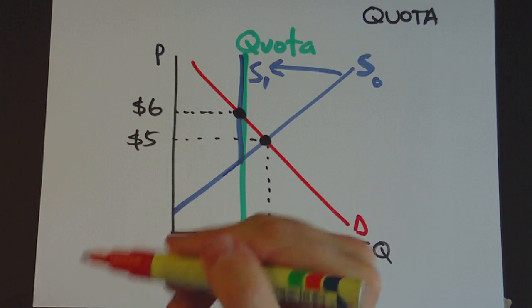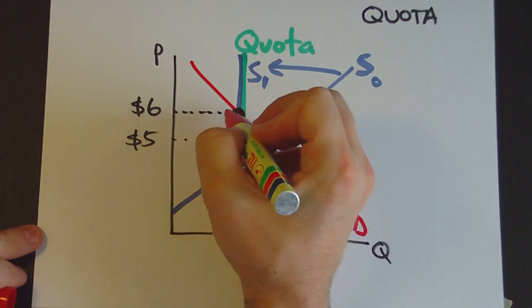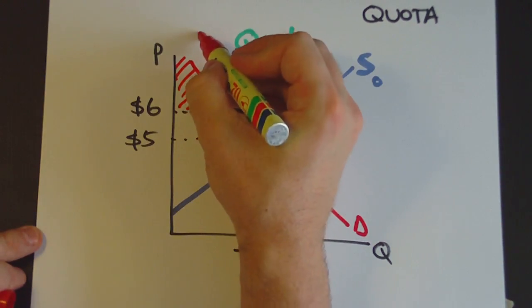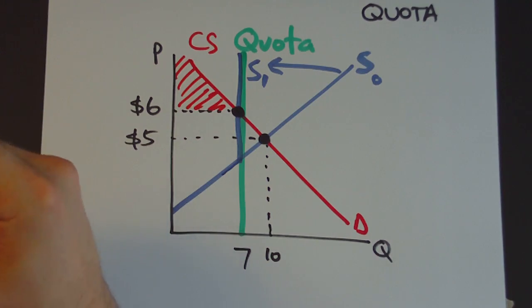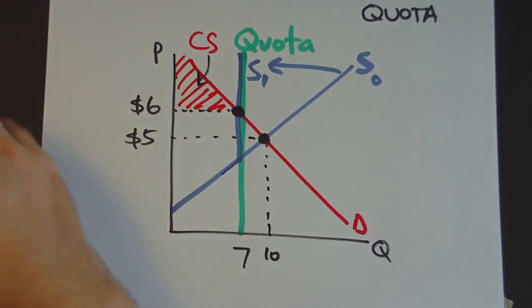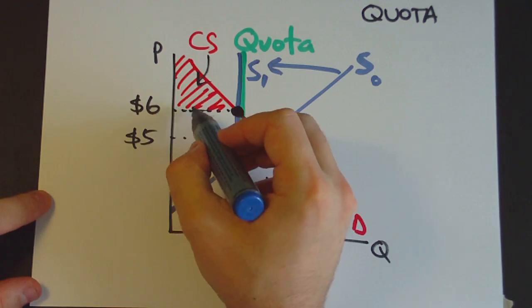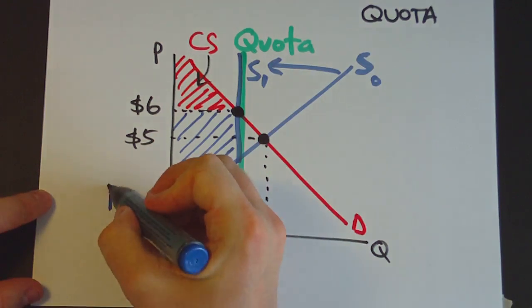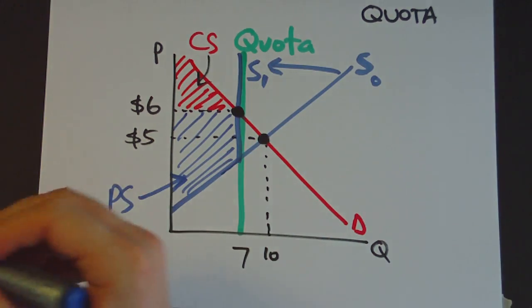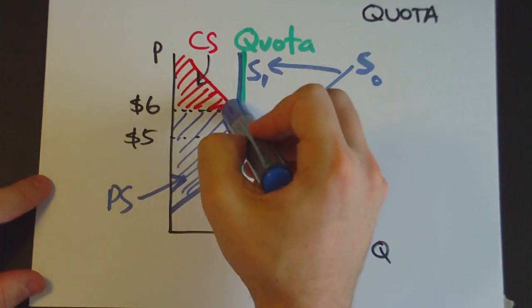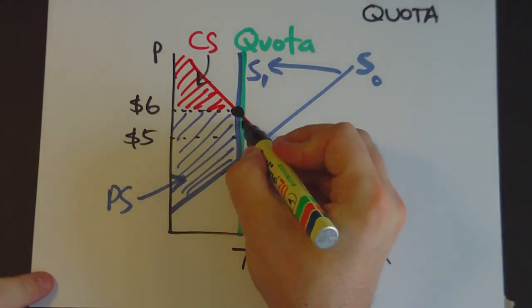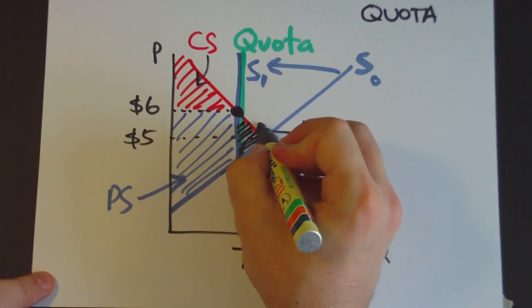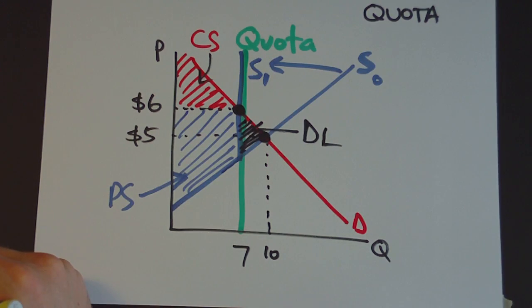What happens to consumer surplus? Consumer surplus is the area between this horizontal line at which the market is operating and the demand curve — so it's now this area here. The producer surplus is the area between that horizontal line and the supply curve — so it's that area there. The social surplus, the total surplus, is just the combination of the two. And you'll notice we've created a deadweight loss by imposing this quota, which is that little triangle there, and no one gets that.